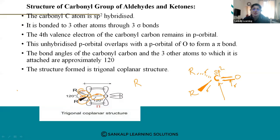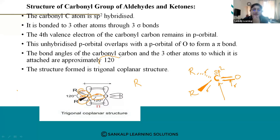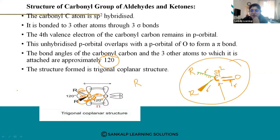This makes the bond angles between the carbonyl carbon and the three atoms to which it is attached approximately 120 degrees. The structure is therefore trigonal planar — you can see it is in the form of a triangle, a triangular coplanar structure. This is the structure of aldehydes and ketones.